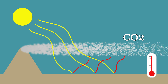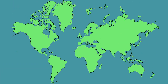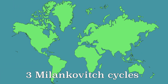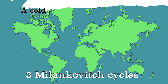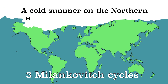Milanković's variables are a final natural influence. Milanković thought that the temperature on Earth was influenced by three variables related to the position of the Earth relative to the sun. In short, the point is that if the northern hemisphere receives less energy from the sun in the summer, the ice on the North Pole will not melt and an ice age may arise.